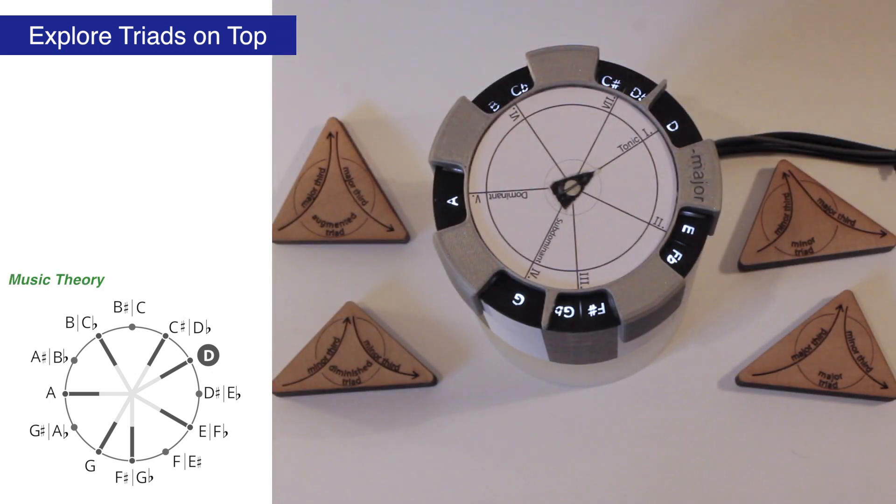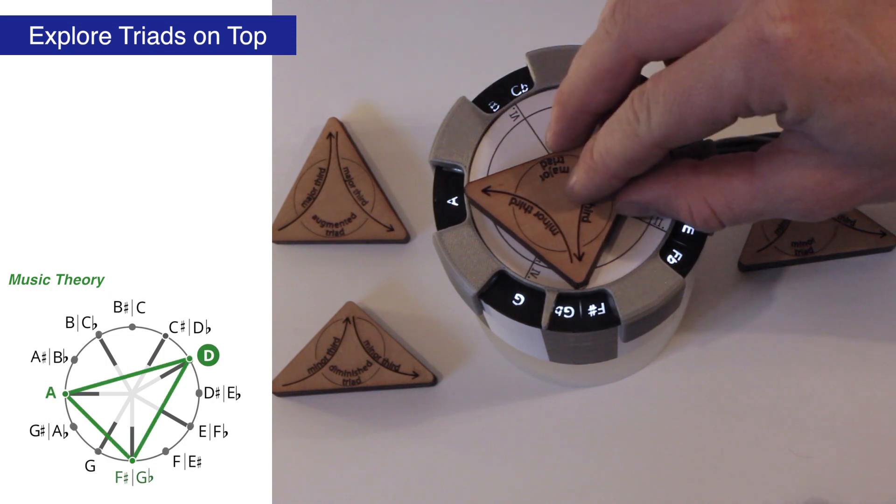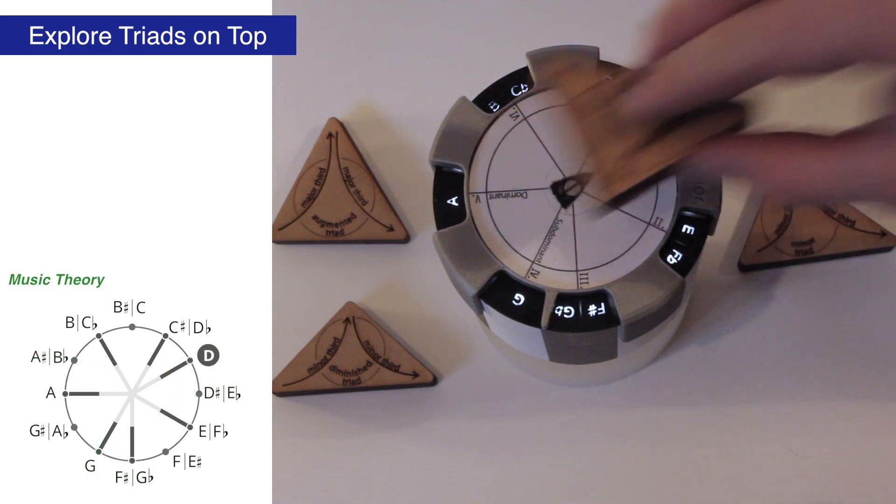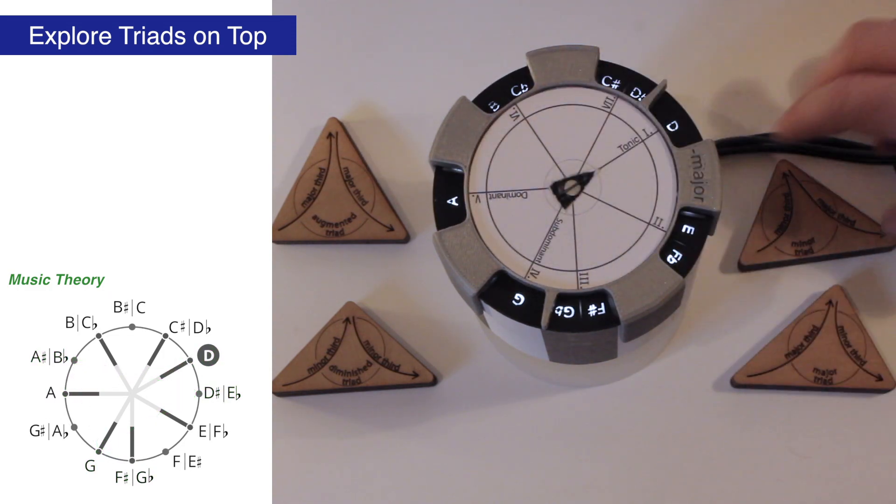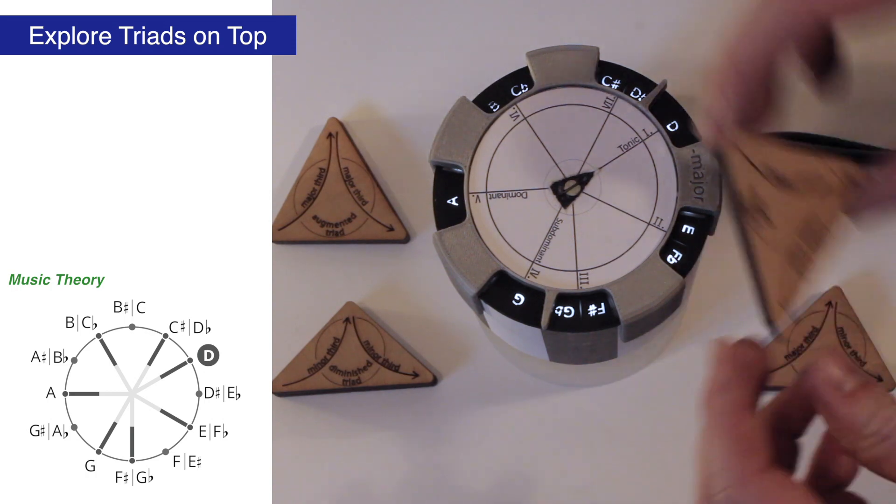Every trite token can be placed on top of our chromatic cylinder and rotated in 12 discrete positions. If a token snaps to a new position, the trite sound is played and the respective note names light up.